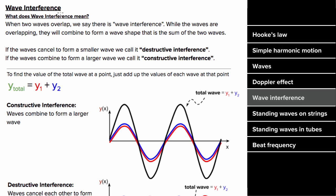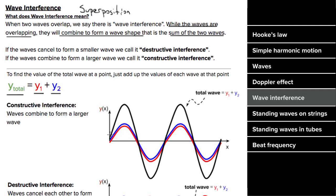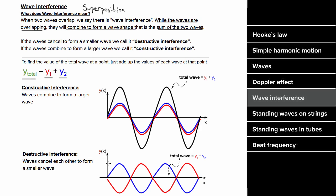When two waves overlap in the same medium, we call it wave interference or wave superposition. While overlapping, they combine to form a wave shape that is the sum of the two waves — you just add up the values of the individual waves. If you overlap two identical waves, they combine to form a wave twice as big: constructive interference. If you overlap two waves that are 180 degrees out of phase, they combine to form no wave at all: destructive interference.